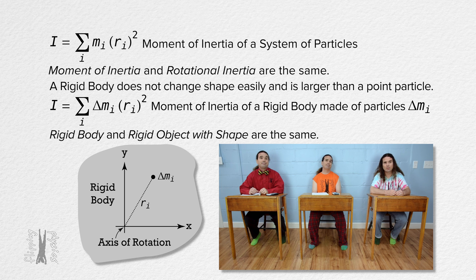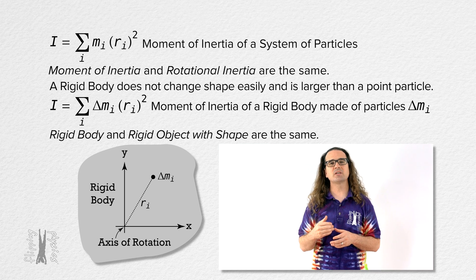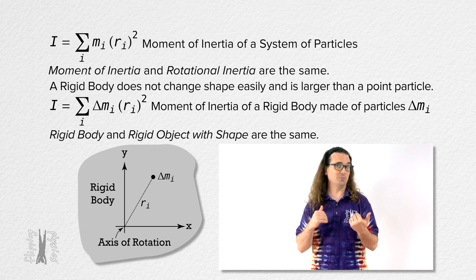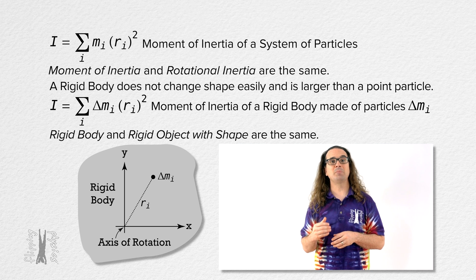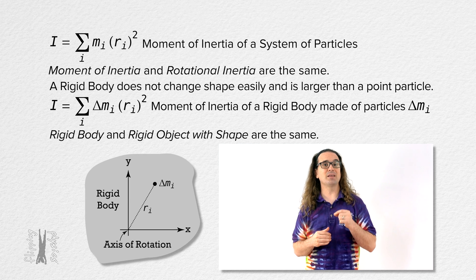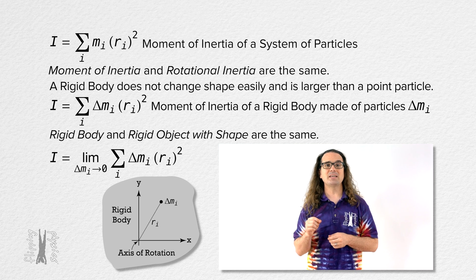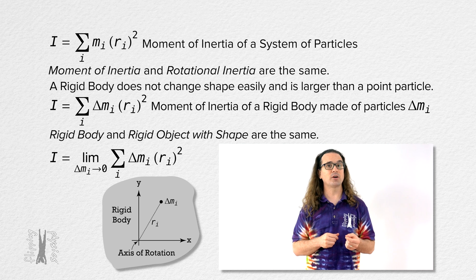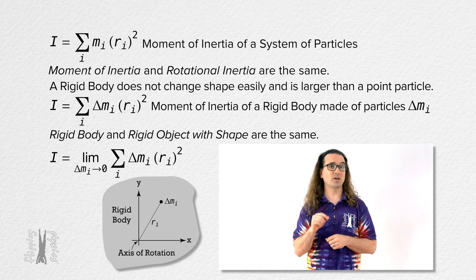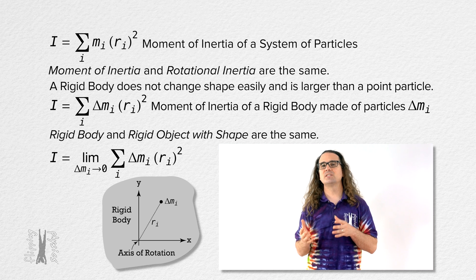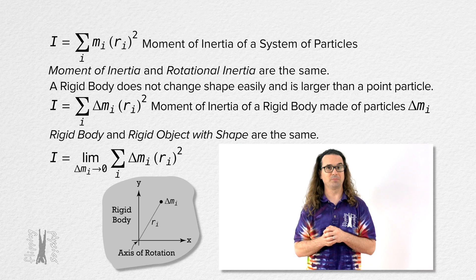Now we take the limit of that equation to increase the number of particles to an infinite number of infinitesimally small particles. The rotational inertia of the object will then be given by the limit as the mass delta m sub i goes to zero of the sum of delta m sub i times the square of r sub i, the distance each delta m sub i is from the axis of rotation.